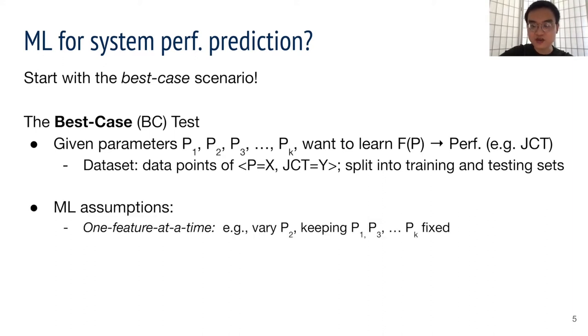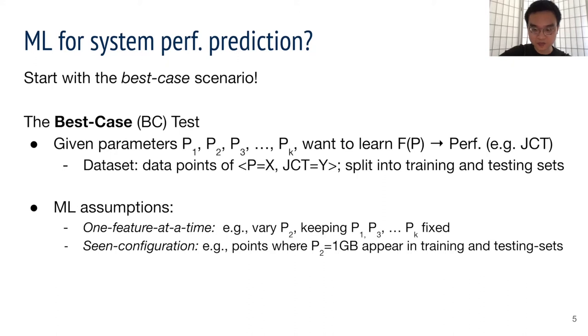Our best case setup has the following simplifying assumptions. We simplify the prediction task by doing prediction one feature or one configuration at a time. In reality, the historical runs may include multiple parameters that are varying. We also allow the machine learning models to see data points of configuration to predict. In reality, these configurations are typically not available and should remain unseen.